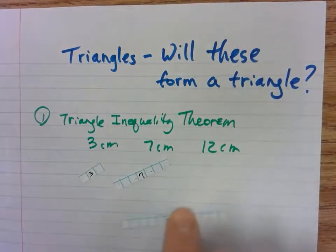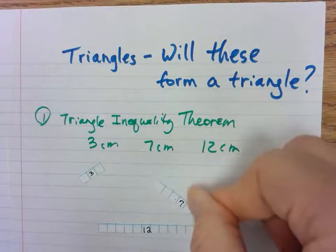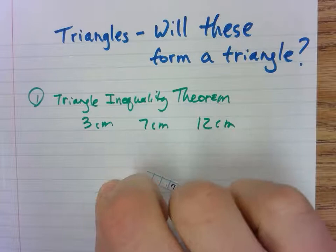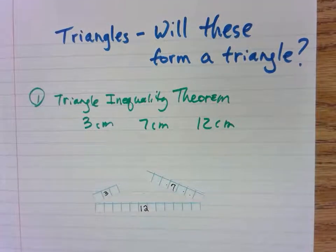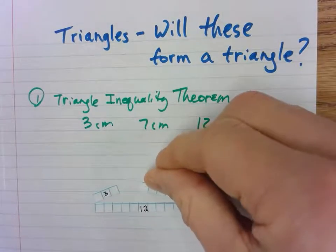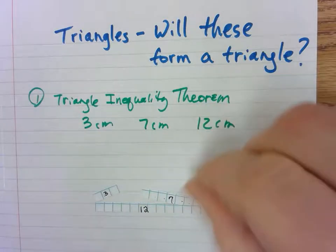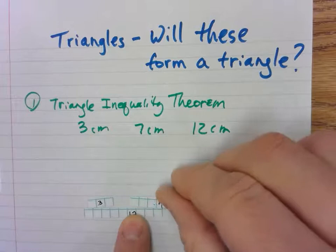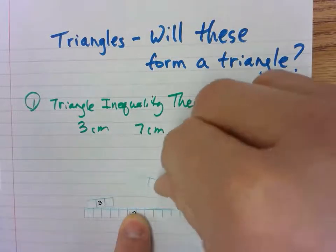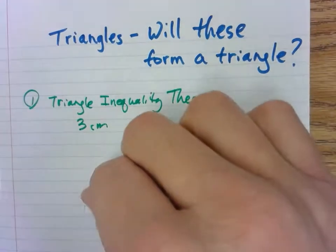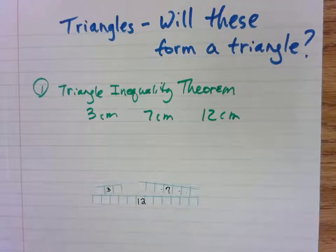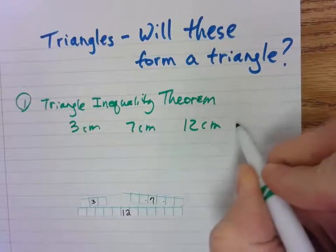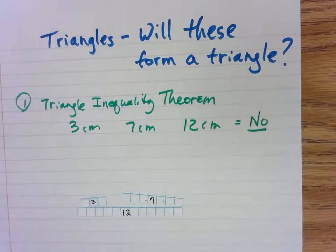So if I put the twelve down and put the seven here, leaning it as far over — see, I'm just barely touching them in the corner. And I put the three over here and barely touch it in the corner. Do you think I can ever put those together to form a triangle? No — you see there's a gap right there. They're never going to meet, so the three, seven, and twelve will NOT form a triangle.